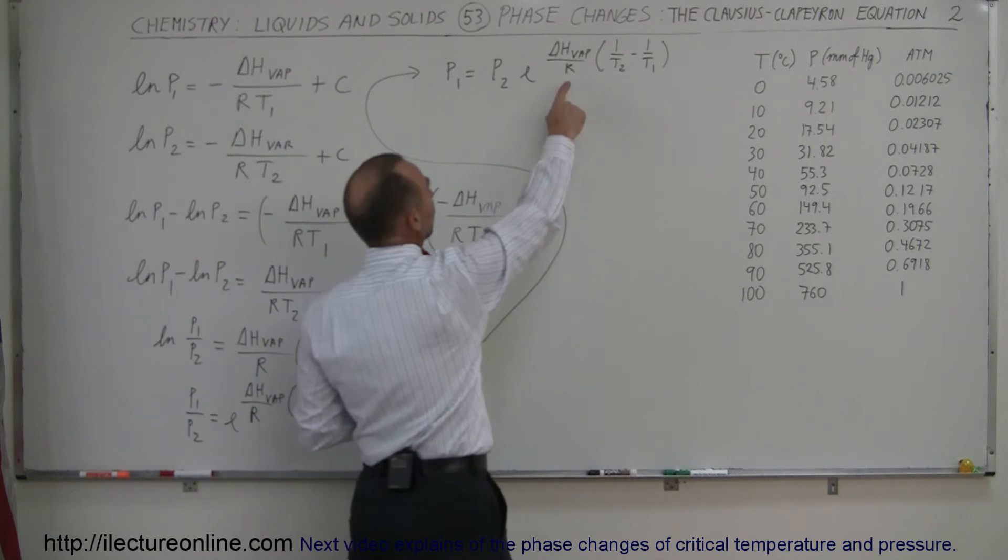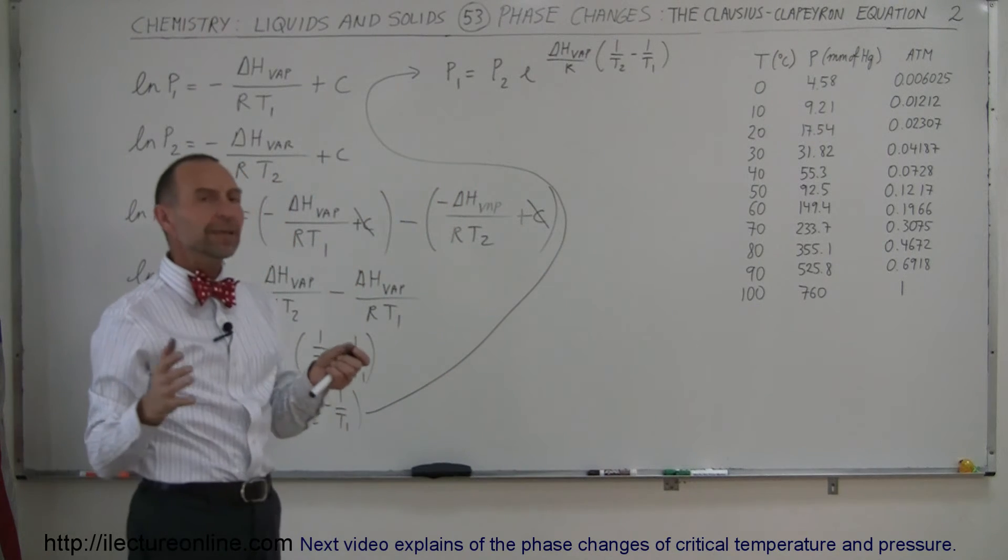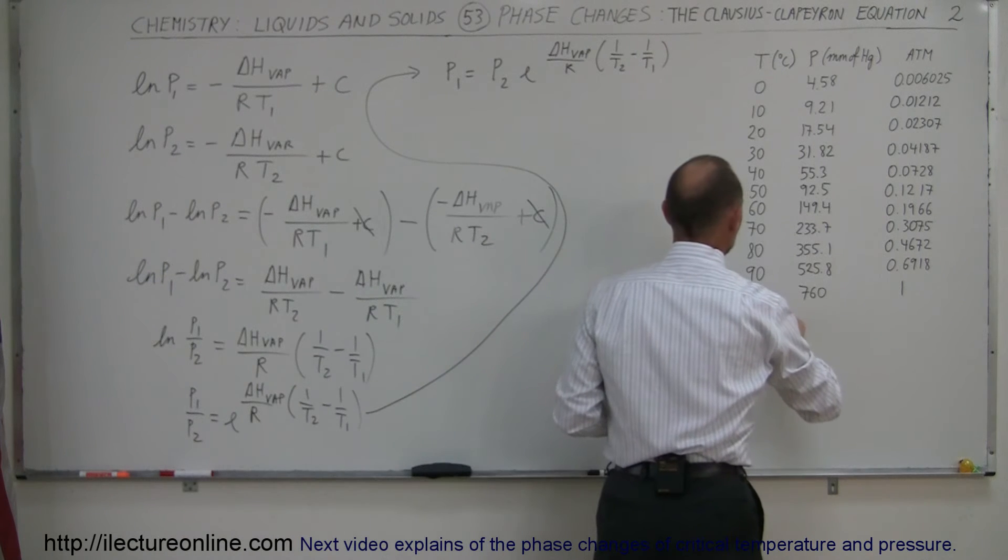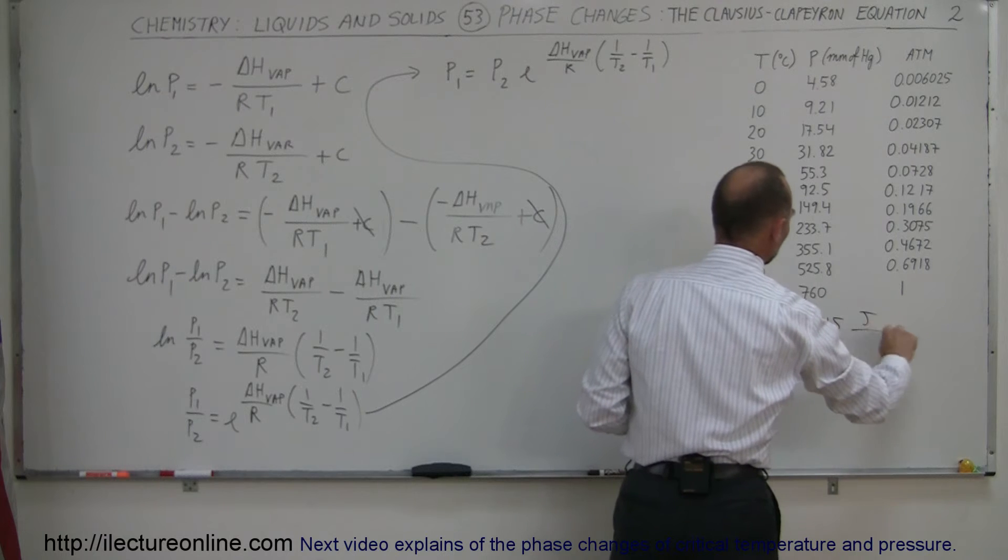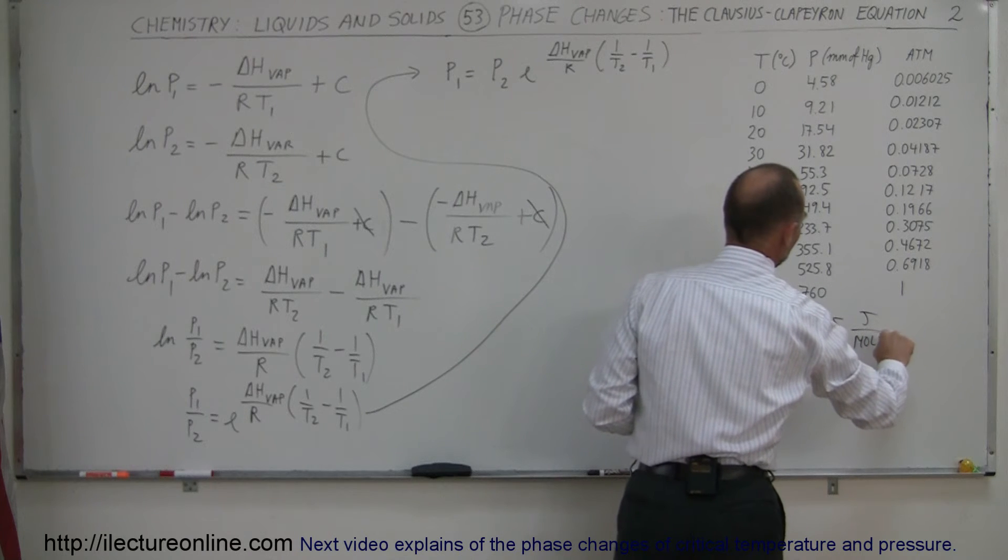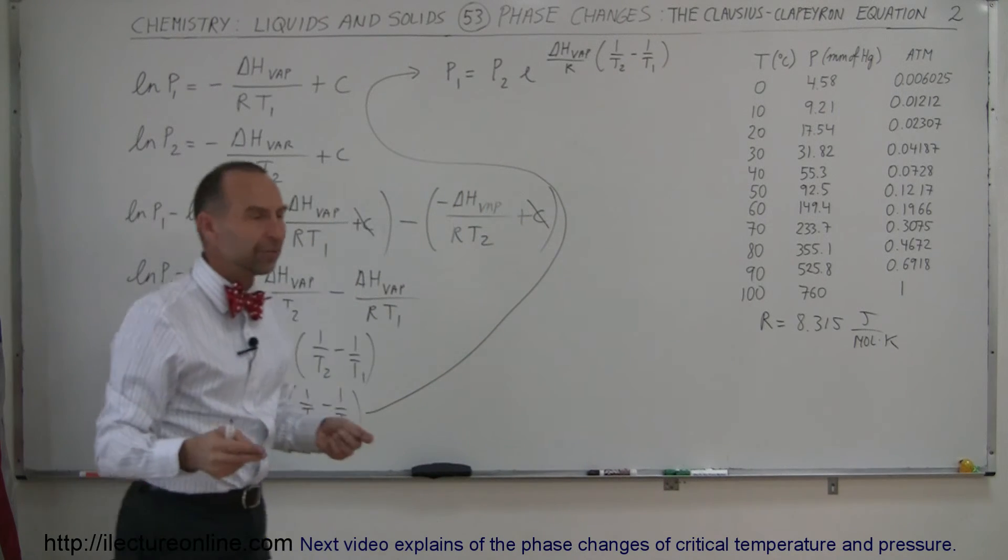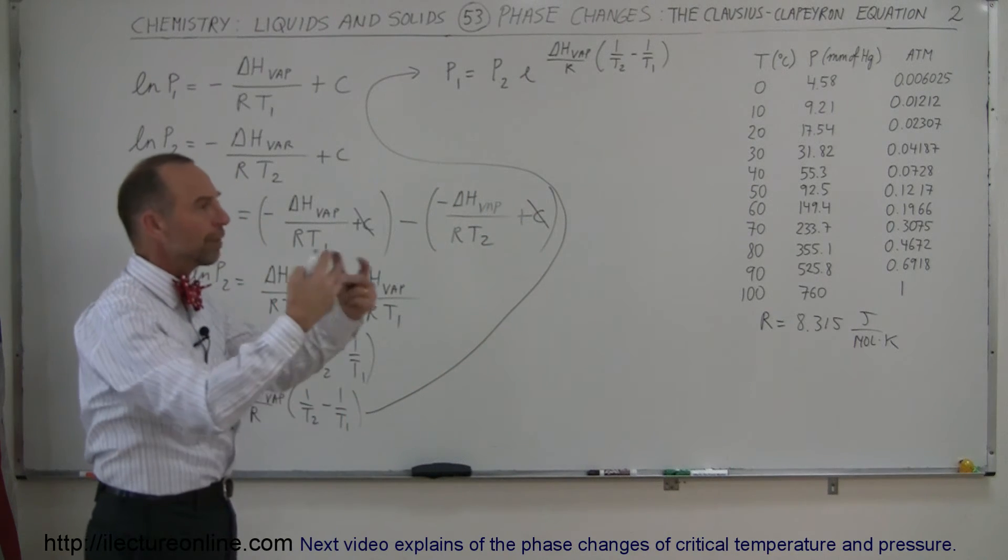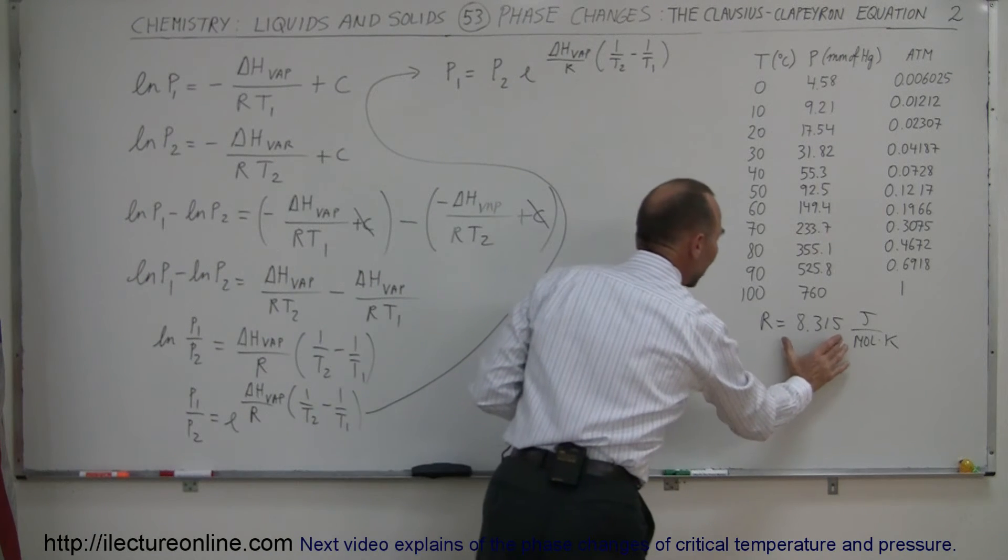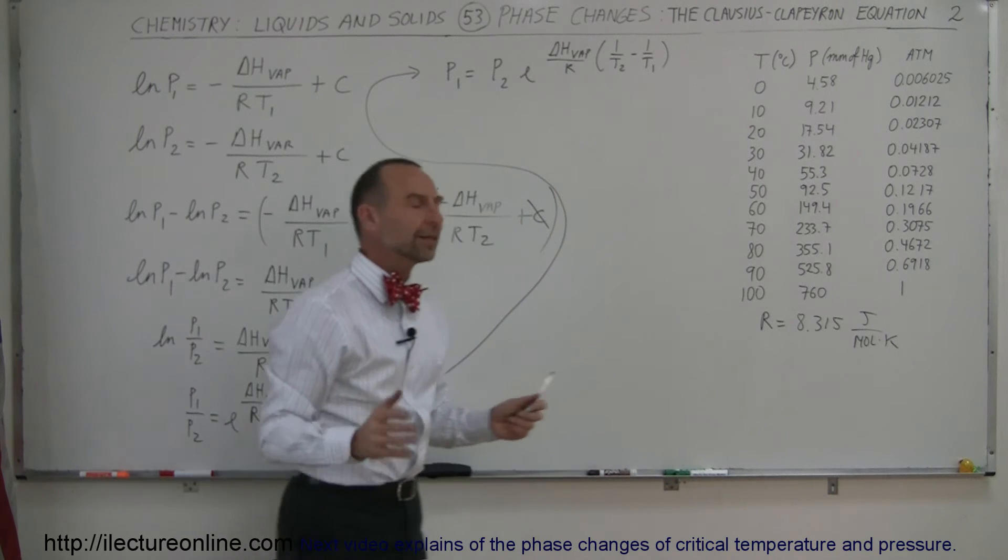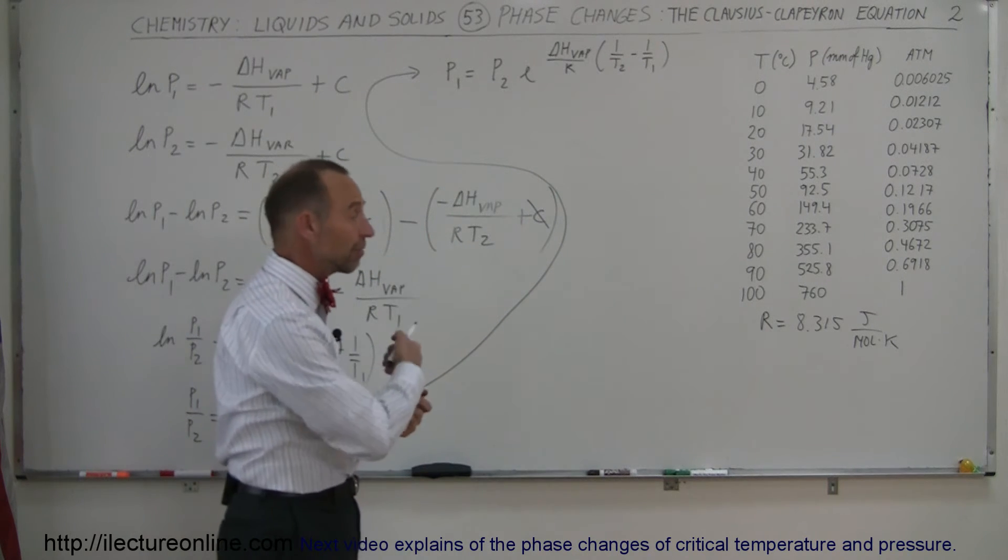One word of caution: look at the R. Remember R is the gas constant, and we know R to be typically 8.315 joules per mole times Kelvin. But since the water molecules have attractive forces when they go into vapor state, they're not ideal gases, they're not ideal vapors, so R actually changes.